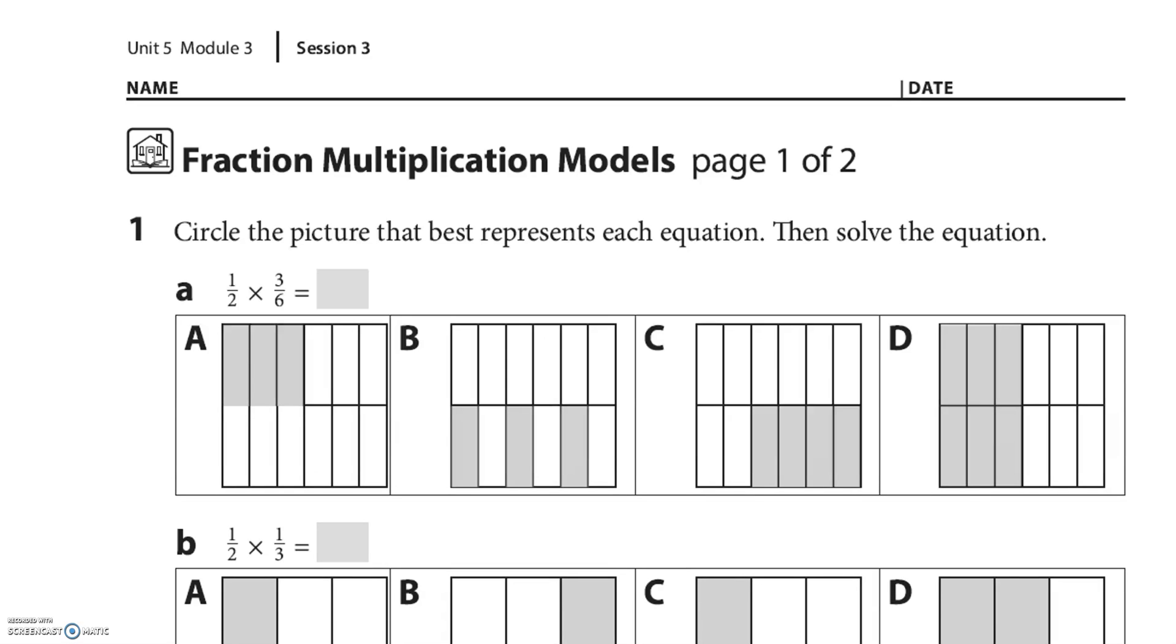So let's just do this first one. You circle the picture that best represents each equation and solve the equation. So this first one, I'm gonna write it as 1/2 of 3/6. It looks like the only ones where you can see 3/6—see how this top part is in 6ths? I see 3/6 right here.